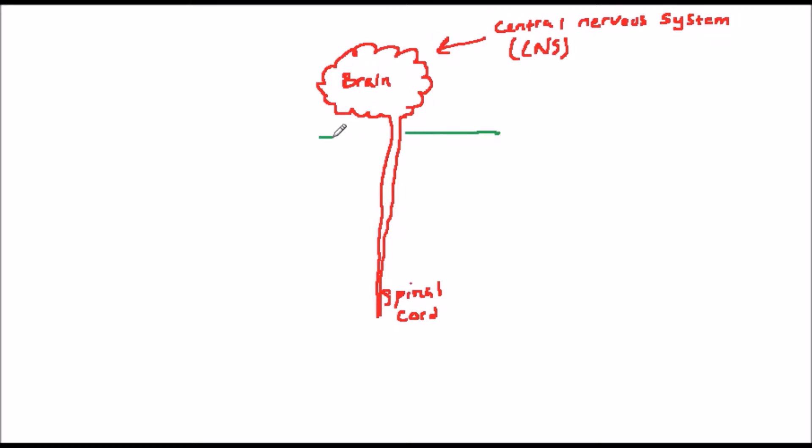The central nervous system, or CNS, which consists of the brain and the spinal cord, and the peripheral nervous system, or PNS, which is everything else.